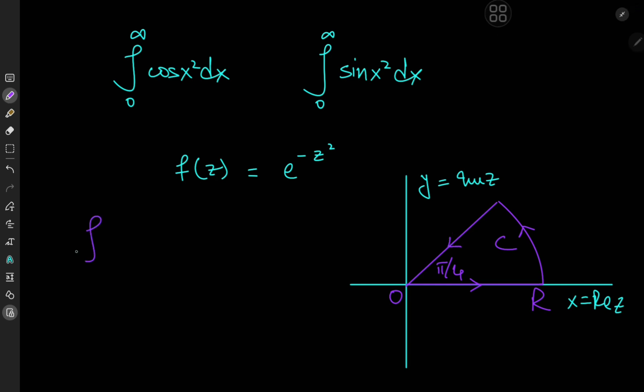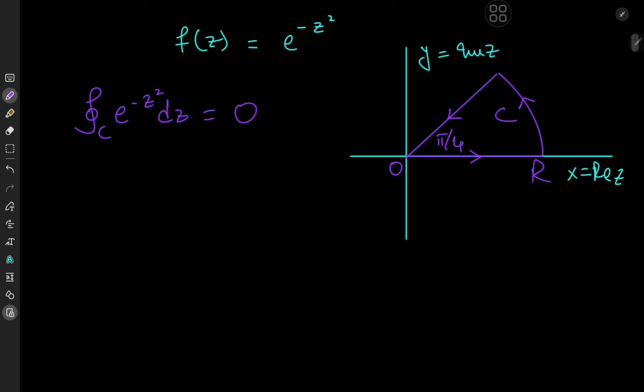If we integrate along the closed contour C the function e to the negative z squared with respect to z, e to the negative z squared is an entire function — meaning it's holomorphic in the entire complex plane. So by the residue theorem we get zero. But we still have to evaluate the two Fresnel integrals, and for that we're going to have to break down the integral over C into its components.